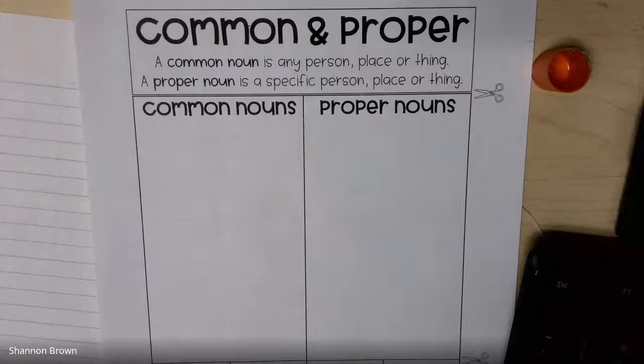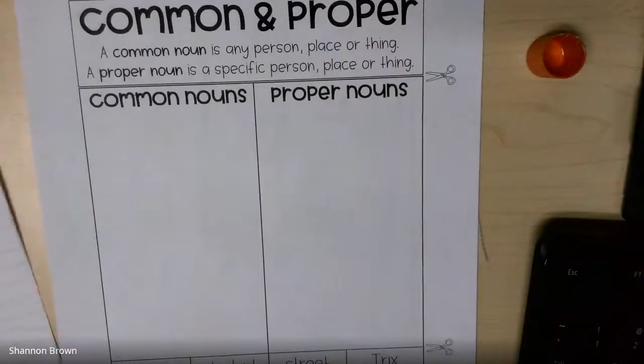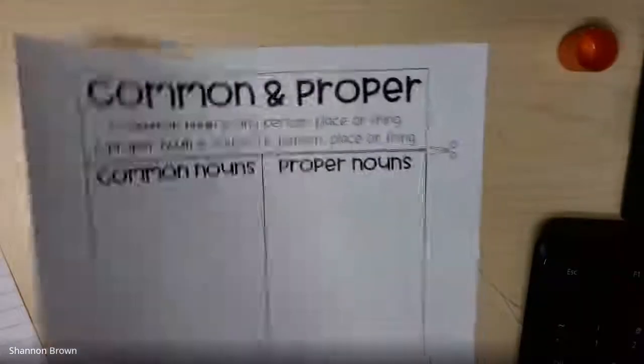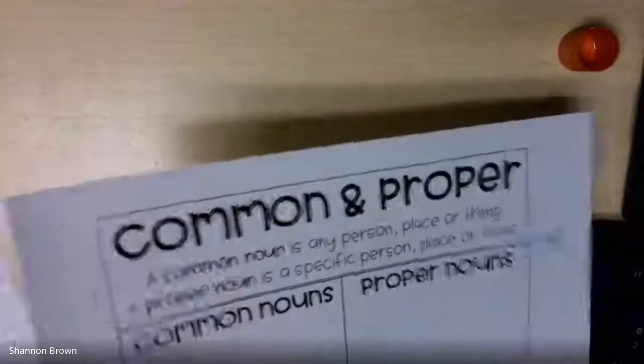For your assignment today, this is our usual Tuesday assignment — our interactive notebook. You are going to open up the next page in your language arts notebook. Go ahead and find your common and proper noun assignment out of the folder that I handed to you on Friday. You're going to cut around this assignment, cutting out the whole thing — it's one big rectangle. You're also going to need your scissors and your glue.